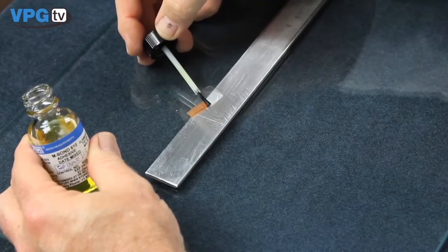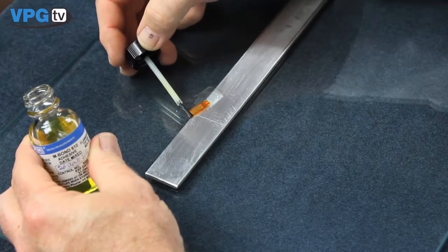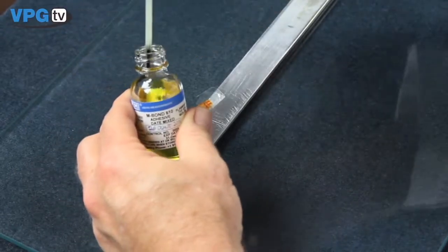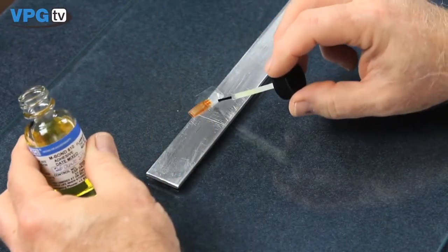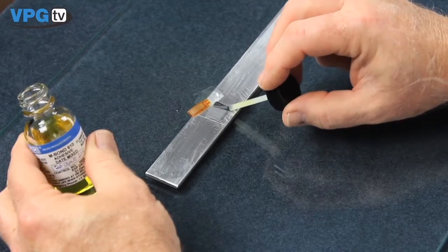Using the side of the brush, coat the bonding side of the WK series gauge with a thin layer of adhesive. In a similar manner, place a thin coating of adhesive on the target area of the specimen.